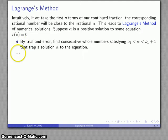By trial and error, we're going to find consecutive whole numbers that trap a solution to the equation. If we do this, we have actually the first step in our continued fraction expansion of alpha - we found the greatest integer less than alpha.